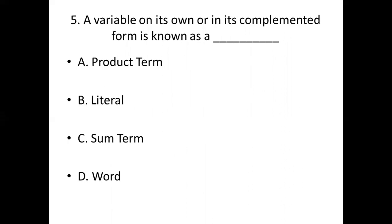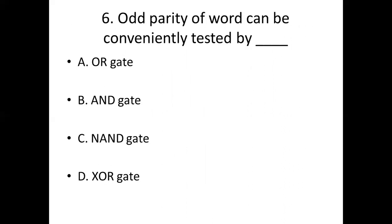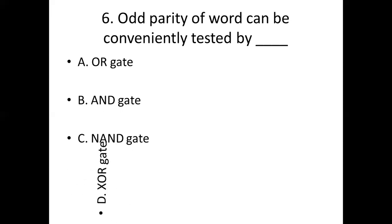Sixth bit. Odd parity of a word can be conventionally tested by dash. Option A: OR gate. Option B: AND gate. Option C: NAND gate. Option D: XOR gate. Answer: Option D, XOR gate.